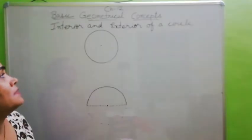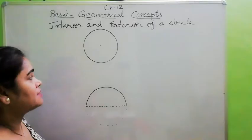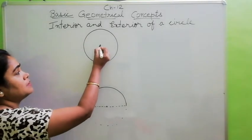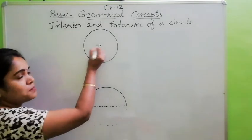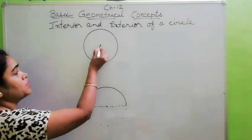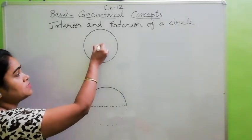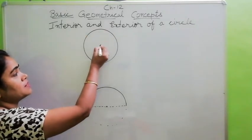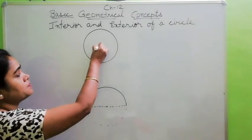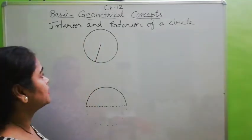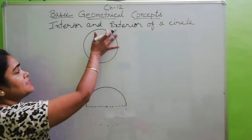So what is a circle? A circle is a set of points which are equidistant from a fixed point. The fixed point in the center, which is equidistant from each point on the circle, is called the center, and the distance between the circumference and the center point is called the radius.